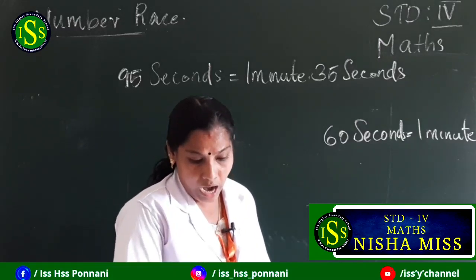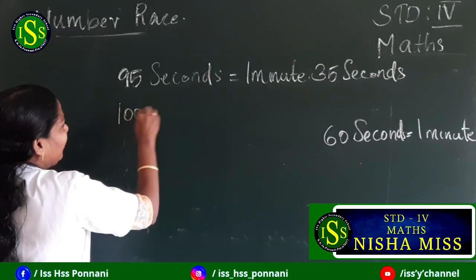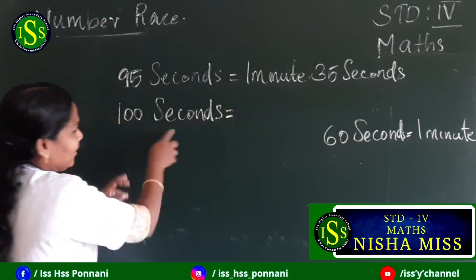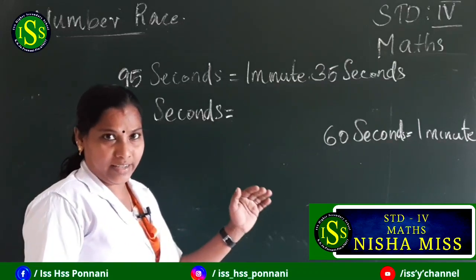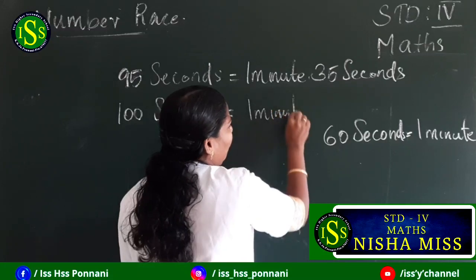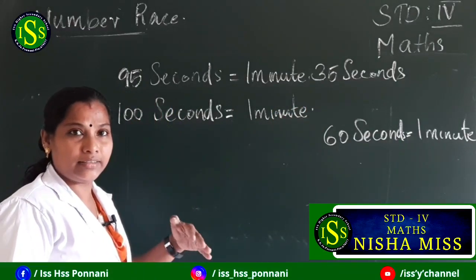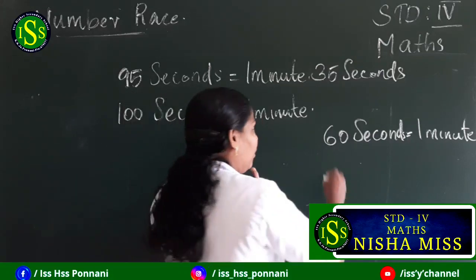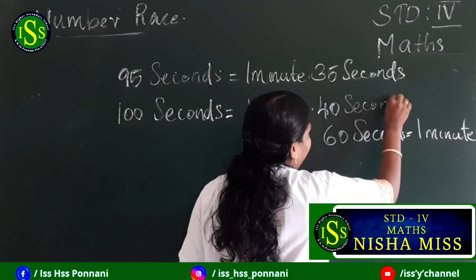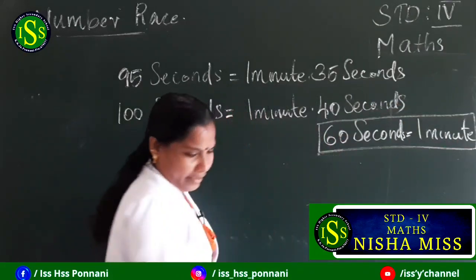Then next: 100 seconds. 60 seconds is 1 minute. The balance after taking 60 seconds from 100 seconds is 40 seconds. So 100 seconds equals 1 minute 40 seconds.